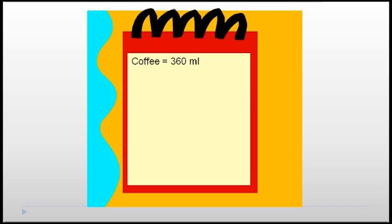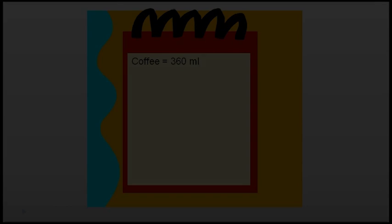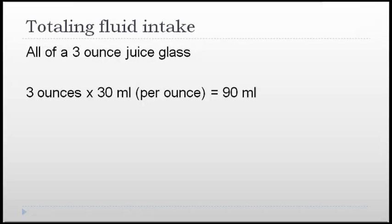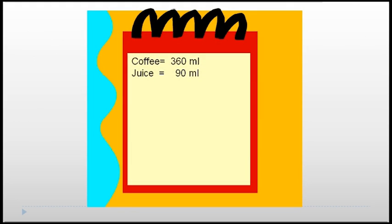On your tablet, write coffee equals 360 milliliters. This orange juice glass is 3 ounces, and Mr. Alan consumed all of it. Multiply the number of ounces by 30 milliliters per ounce: 3 ounces times 30 milliliters per ounce equals 90 milliliters. Since he drank the entire glass, write juice equals 90 milliliters on your tablet.